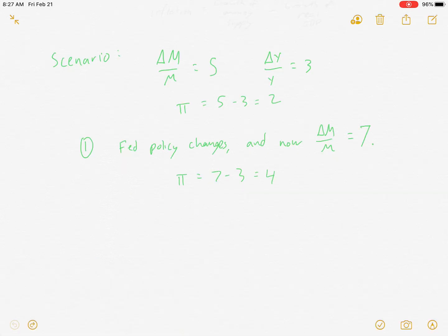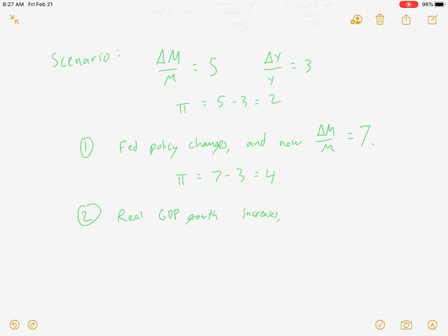All right, and let's do a follow-up real quick. Let's say that real GDP growth increases to 4%. What's that do to inflation if nothing else changes? Inflation is now 7% minus 4%, which equals 3%. And that just suggests as real GDP growth rate increased, inflation decreased in a one-to-one way.